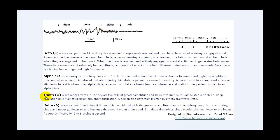The third wave type is the theta wave, abbreviated with its symbol, ranging from 4 to 7 hertz. It typically has greater amplitude and slower frequency — the amplitude is increasing while the frequency is decreasing. It is associated with sleep, deep relaxation, and visualization. A person in a daydream is often in a theta brainwave state.